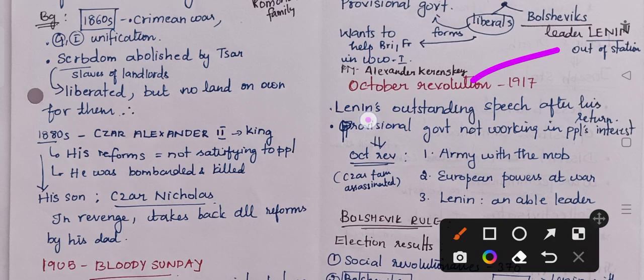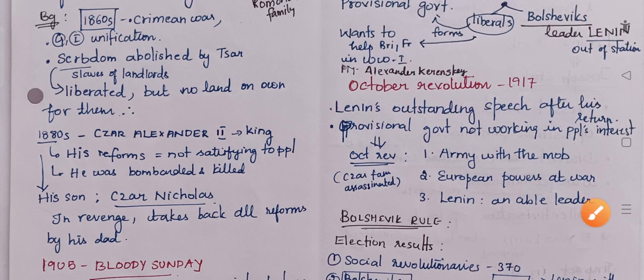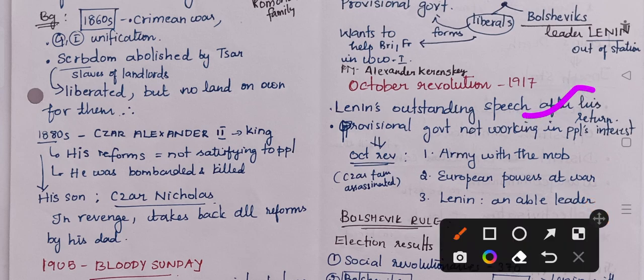Next was the October Revolution of 1917. Lenin gave an outstanding speech after his return. Lenin showed the shortcomings of the provisional government, proving it was not working in the people's interests. That led to the October Revolution, in which the Tsar family was assassinated. The army joined with the mob, and European powers were at war. Lenin was considered an able leader.